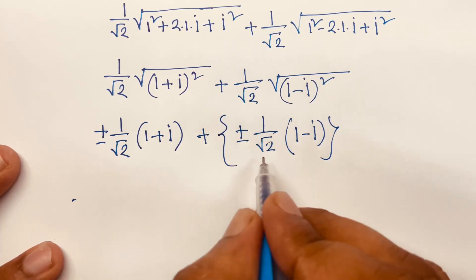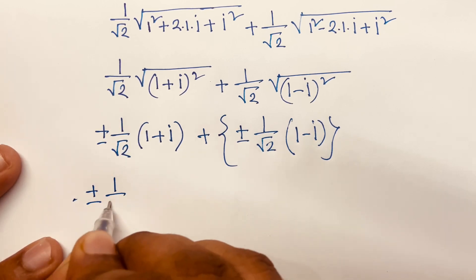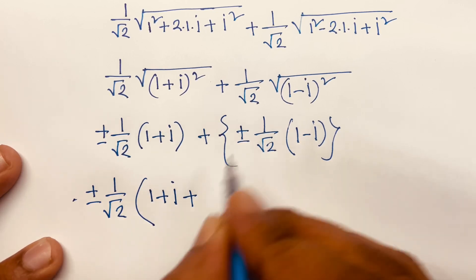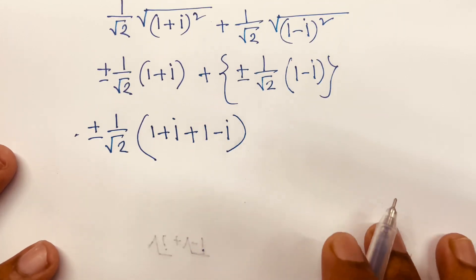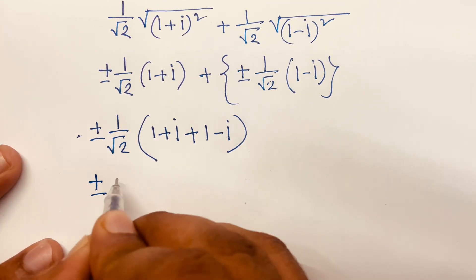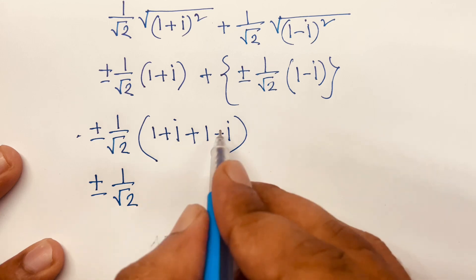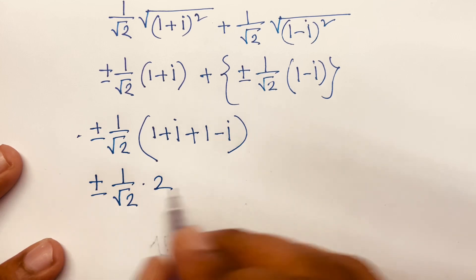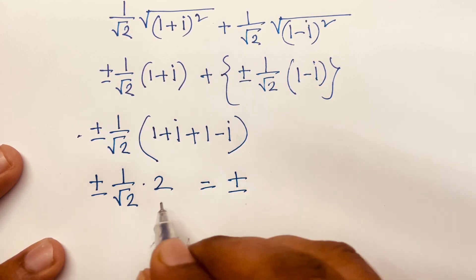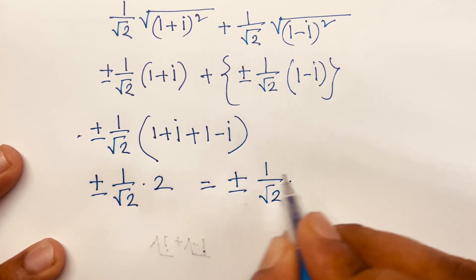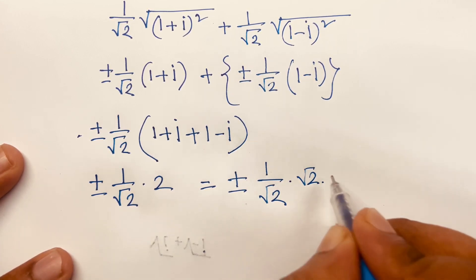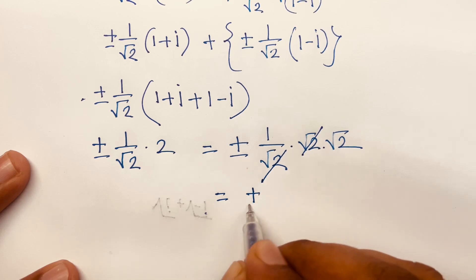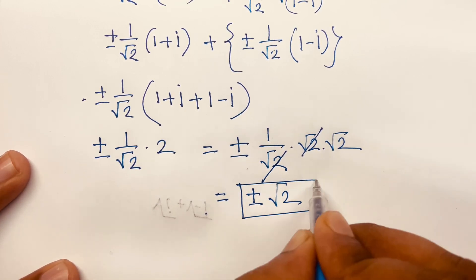Factoring out ±1/√2 as common, we get ±1/√2 · [(1 + i) + (1 − i)]. The i terms cancel, and 1 + 1 = 2, so we have ±1/√2 · 2. Since 2 = √2 · √2, we get ±√2 as our final answer.